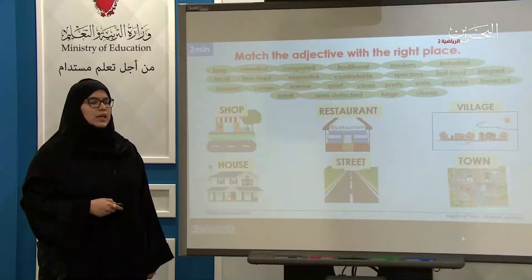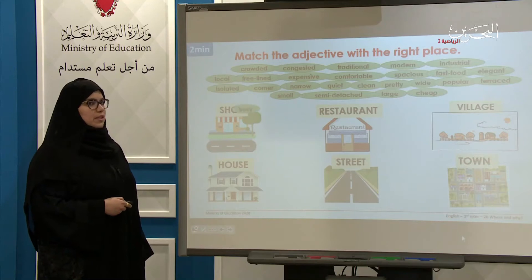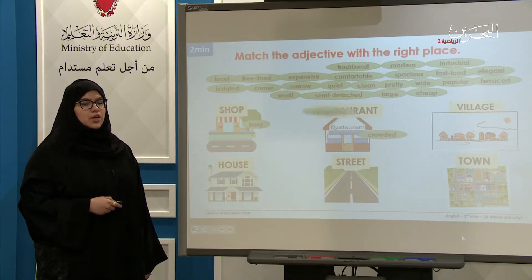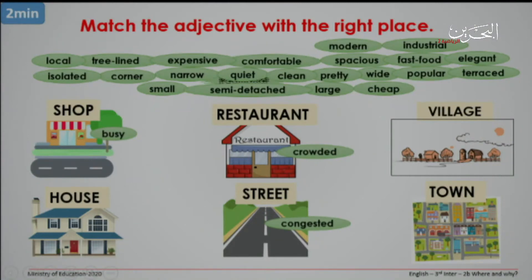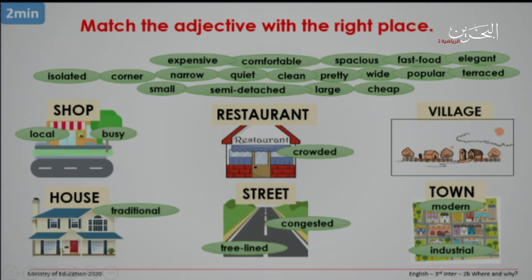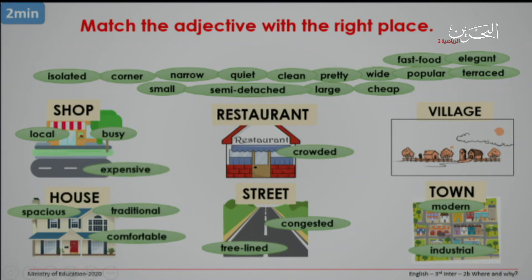Now let's check our answers. We have: busy shop, crowded restaurant, congested street, traditional house, modern town, industrial town, local shop, tree-lined street, expensive shop, comfortable house, and spacious house.